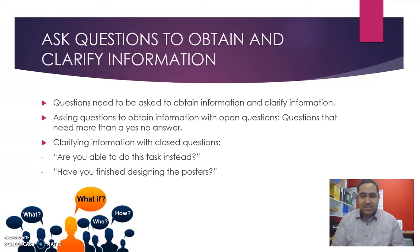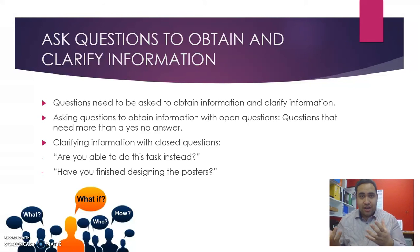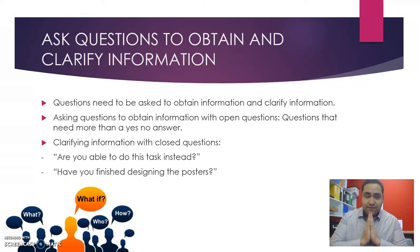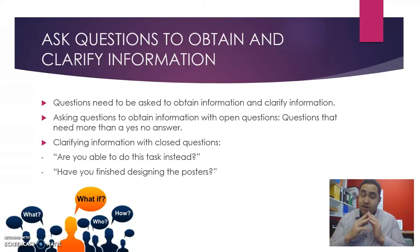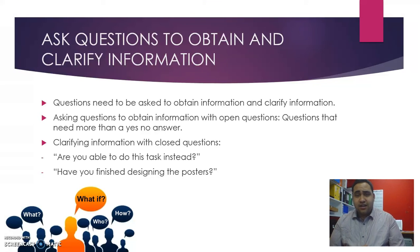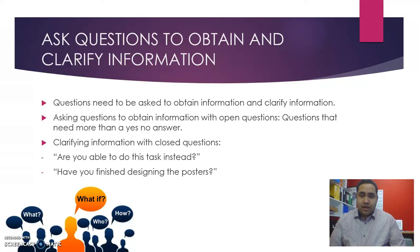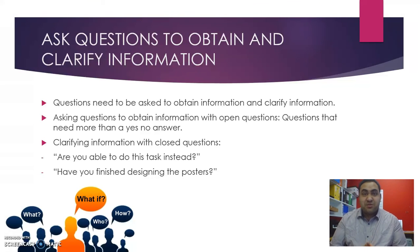Next is asking questions to obtain and clarify information. Check the learner's guide if you're unsure about the differences between open and closed questions. Questions need to be asked both to obtain information and to clarify information. One way to obtain information is with open questions — these require more than a yes or no answer. Examples include: 'Why do you think we should go with this idea?' or 'What's the best way we can sell this product?'